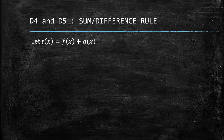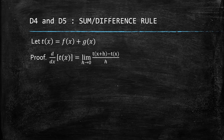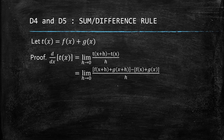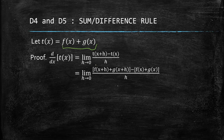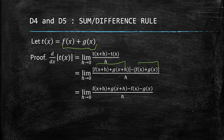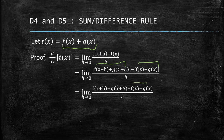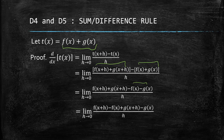To prove this, let's define another function t(x) equivalent to f(x) + g(x), and we'll prove the sum rule. Using the limit definition of the derivative, we have t(x+h) minus t(x) over h. Substituting, t(x+h) equals f(x+h) + g(x+h), and t(x) equals f(x) + g(x). We then simplify by removing the grouping symbols, giving us minus f(x) and minus g(x).